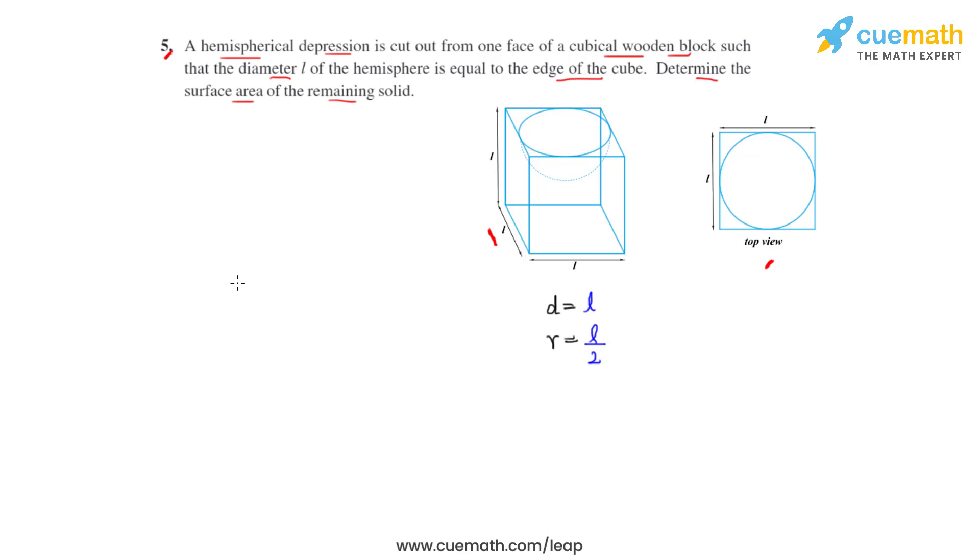So the formula that we can write to find the total surface area of the formed solid will be: total surface area equals total surface area of cube plus curved surface area of the hemisphere minus the area of base of hemisphere.